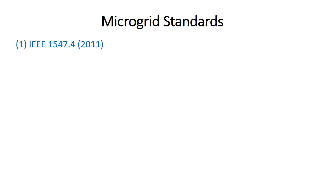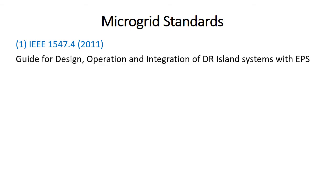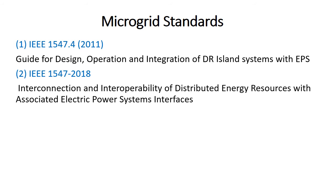The first group covers IEEE 1547.4: Guide for Design, Operation and Integration of Distributed Resources Island Systems with Electric Power Systems. The same standard was modified in 2018 to address interconnection and interoperability of distributed resources with associated electric power system interfaces. Both versions consider interoperability aspects.